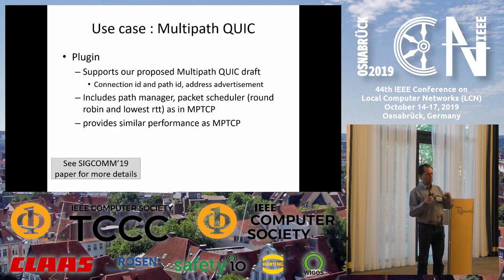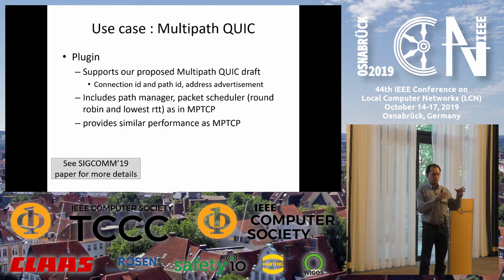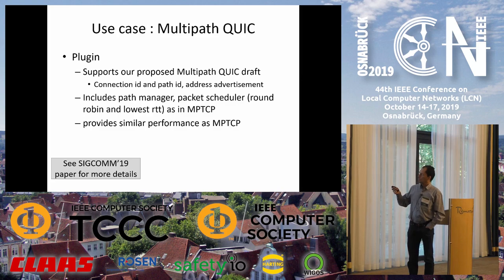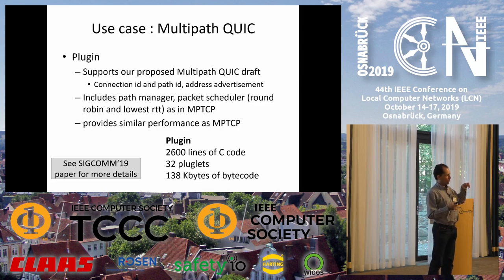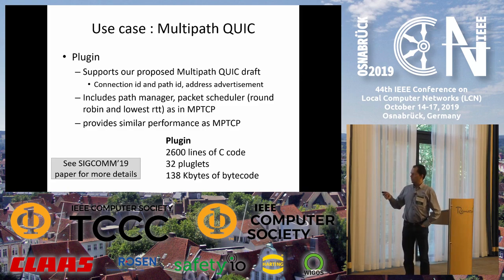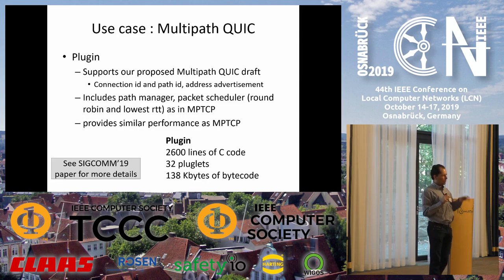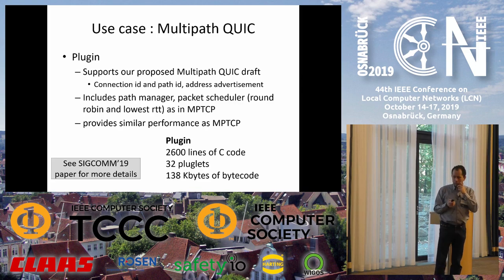The second use case is Multipath QUIC. There are multipath extensions to QUIC just as there are to TCP. The QUIC working group at the IETF doesn't want to discuss Multipath QUIC extensions until they have finished version 1 of QUIC. We have implemented Multipath QUIC as an eBPF extension on top of single-path QUIC, which is PicoQUIC from Christian Huitema. It provides the same performance as Multipath TCP, except that you download it automatically from the server. During the last 10 years we have been pushing Multipath TCP into Linux, iPhone, and so on — getting it deployed is very difficult. With Multipath QUIC, if QUIC is deployed, we have about 2,000 lines of C code and 140 KB of bytecode to exchange, and with that we can push the Multipath extension to a client that does not support it.